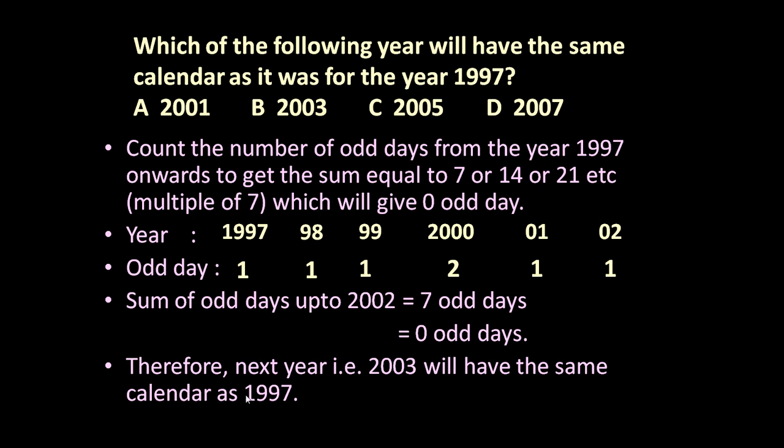The answer is 2003. Sometimes what happens is we don't get a sum total equal to 7 - after 6 it becomes 8, 9, 10, so we need to continue to get 14 or 21, etc.